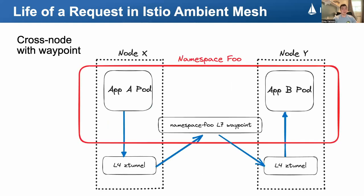For cross-node, the first part of the request is the same. The request gets sent to the co-located Z-Tunnel for client A. A waypoint is detected for destination B, but then the request gets routed through B's node local Z-Tunnel. Now you might ask, what node is the waypoint running on? The answer? It doesn't matter. The IP that Z-Tunnel retrieves for the waypoint could refer to a service IP, in which case the waypoint pod handling the request could be one of any number of replicas for that deployment.